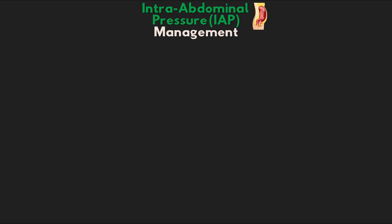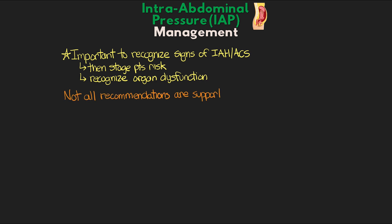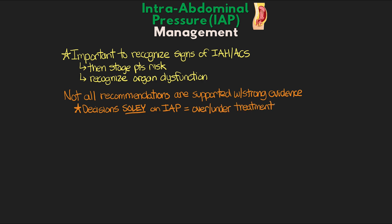In order to appropriately manage these patients, it is important to quickly recognize the signs of intra-abdominal hypertension or abdominal compartment syndrome, and then to properly stage that particular patient's risk as well as recognition of any organ dysfunction. While the algorithms from the Abdominal Compartment Society are helpful, it is important to understand not all recommendations are going to be supported with strong evidence. Making decisions solely based on the value of the intra-abdominal pressure alone can lead to under- or even over-treatment.